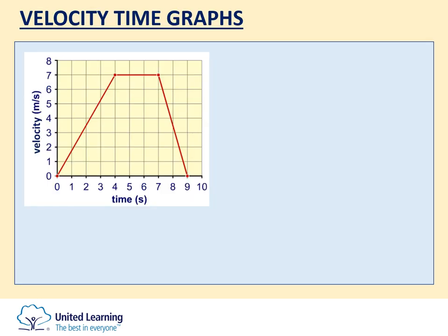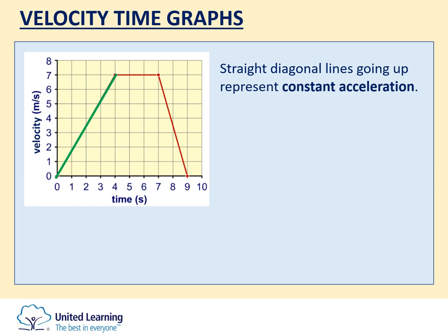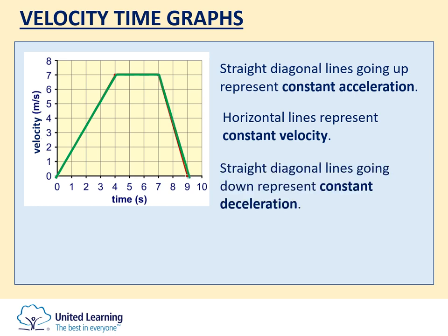Moving on to velocity time graphs — not to be confused with distance time graphs, which look very similar. Please check the y-axis: this one says velocity in metres per second, whereas a distance time graph would say distance. Important features: any straight diagonal line going up and to the right represents an object moving with constant acceleration. Any horizontal line represents constant velocity — if the object is not moving at all, that line follows along the x-axis at v equals zero. A straight diagonal line going downwards represents constant deceleration — the object is slowing down.